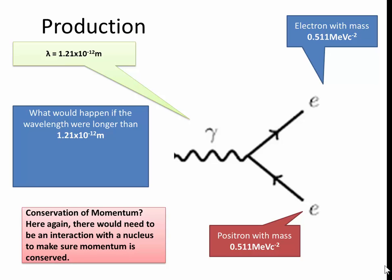What would happen if the wavelength were longer than 1.21 times 10 to minus 12 meters? Well, if you have a longer wavelength, you've got a smaller frequency, which means a lower energy. And there would be not enough energy to produce the electron and anti-electron pair. So this is annihilation and production.